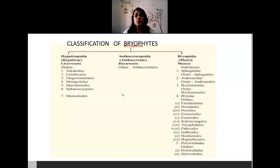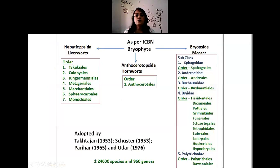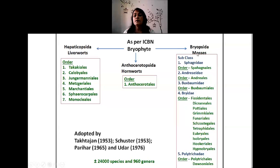This classification is followed even now as per ICBN rules. Hepaticopsida members are called liverworts — thallus-like or leaf-like structures resembling the lobes of the liver. Anthocerotopsida are called hornworts because their sporophytes are thorn-like. Bryopsida are miniature moss-like plants. Overall, around 24,000–25,000 species and around 960 genera are divided into these three classes, a classification followed by most bryologists and taxonomists including Takhtajan, Parihar, Chorster, and Udar.